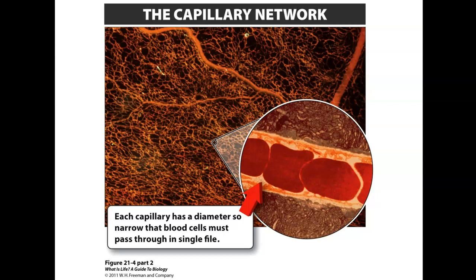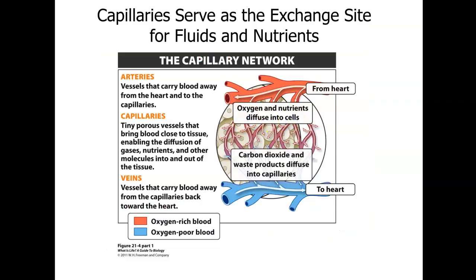There is a smooth muscle at the beginning of capillary sections — a pre-capillary sphincter — that can clamp down to keep blood from moving through, or open to allow blood flow. Veins and venules have valves because they are not under high pressure. Arteries are under high pressure coming off the heart, so veins need valves to prevent blood from flowing backwards.